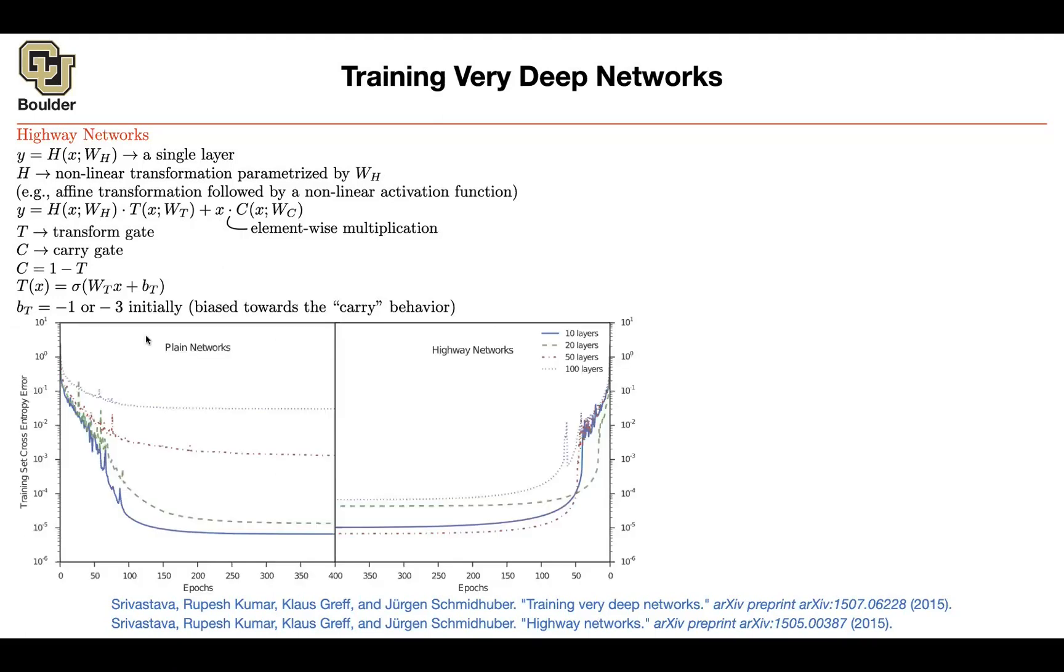This is the observation that I mentioned. Don't look at the figure on the right or the subfigure on the right yet. Look at the plane network. This is a network like this. Y is equal to some nonlinearity XWH. These are plain and simple networks. And then you are increasing the number of layers. Initially, you have 10 layers.